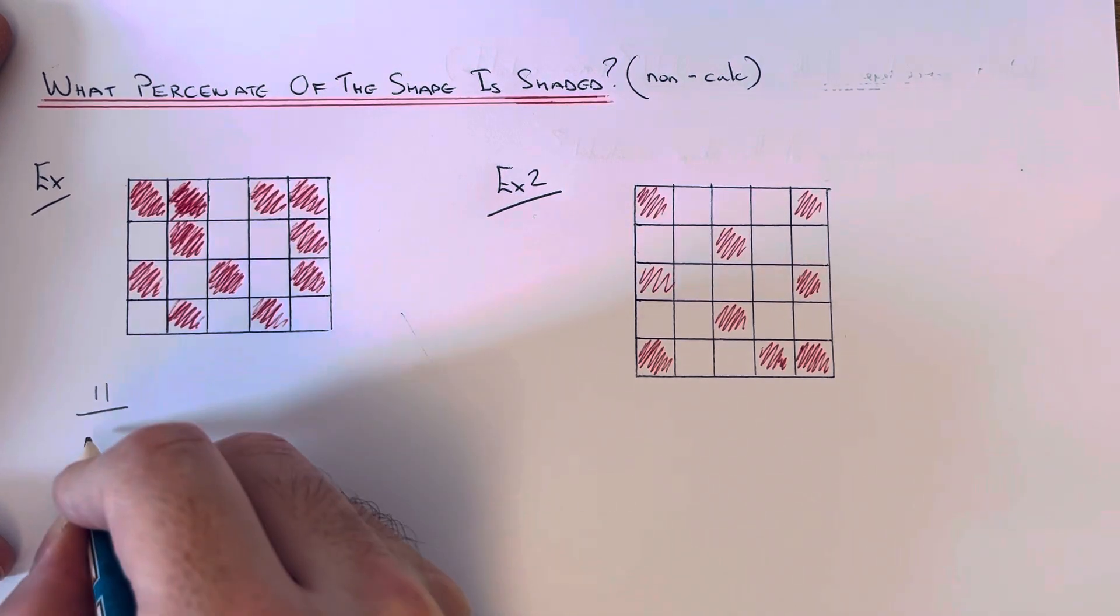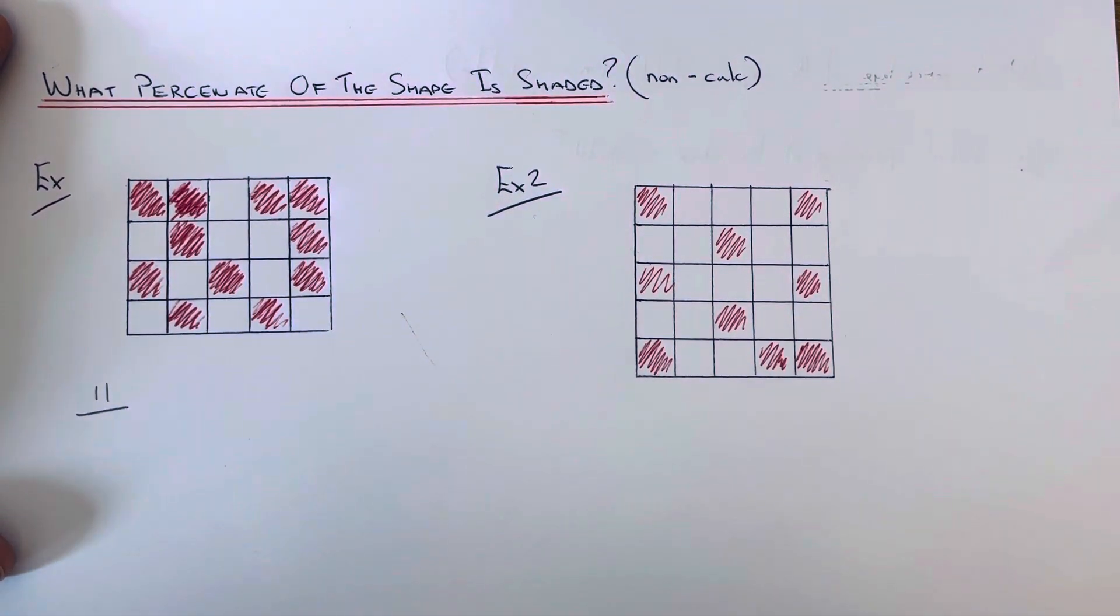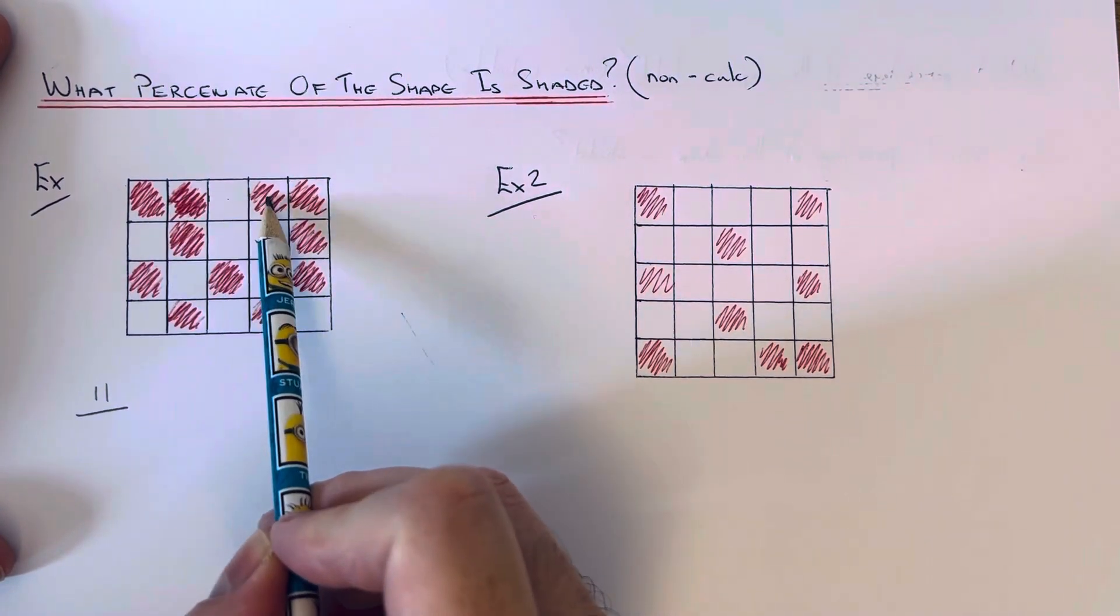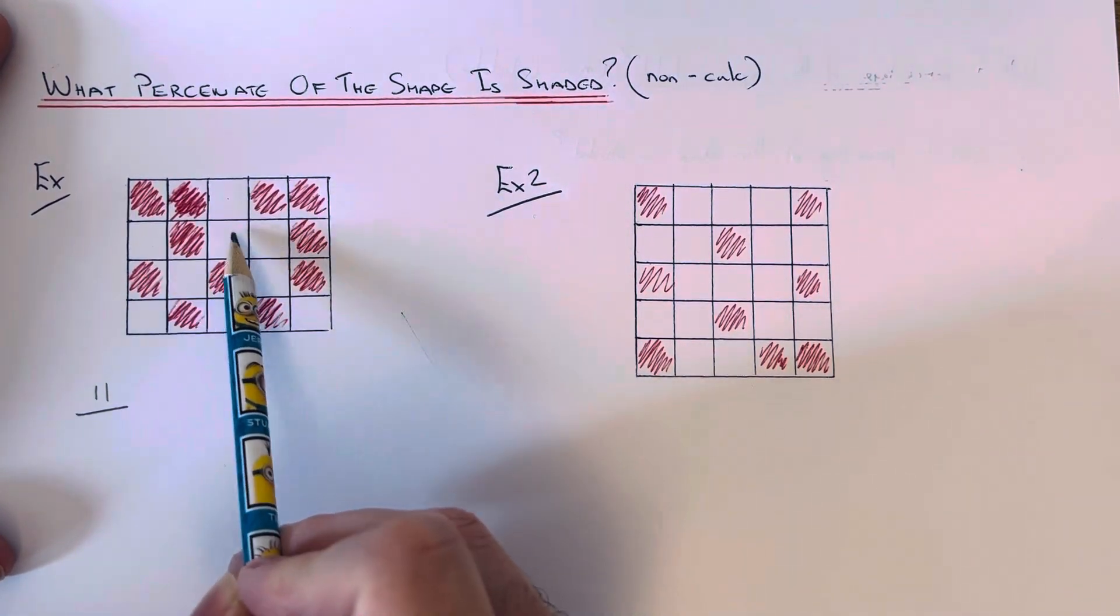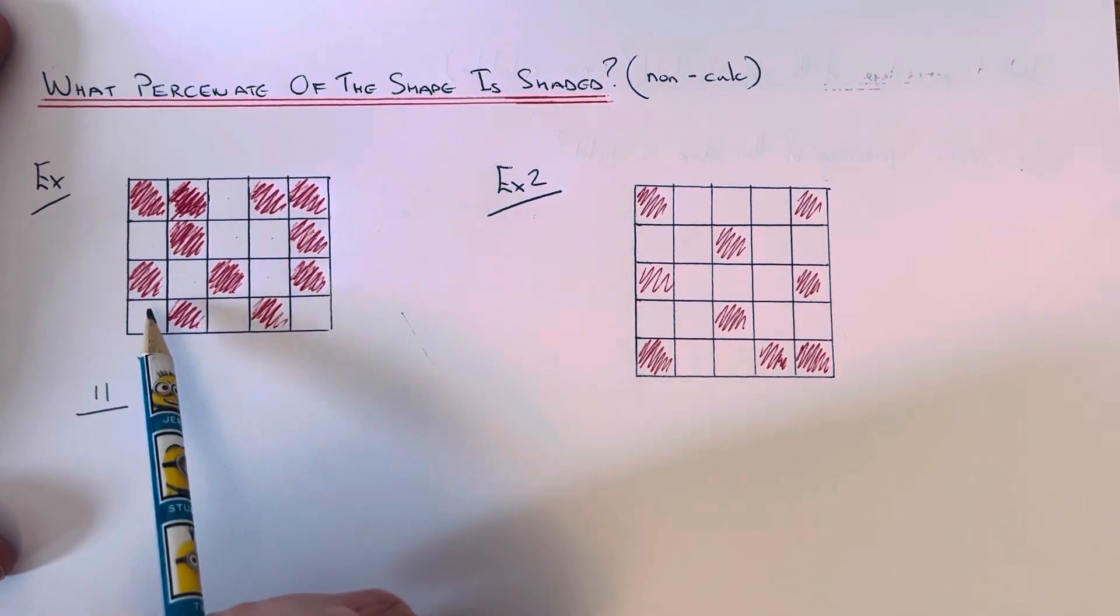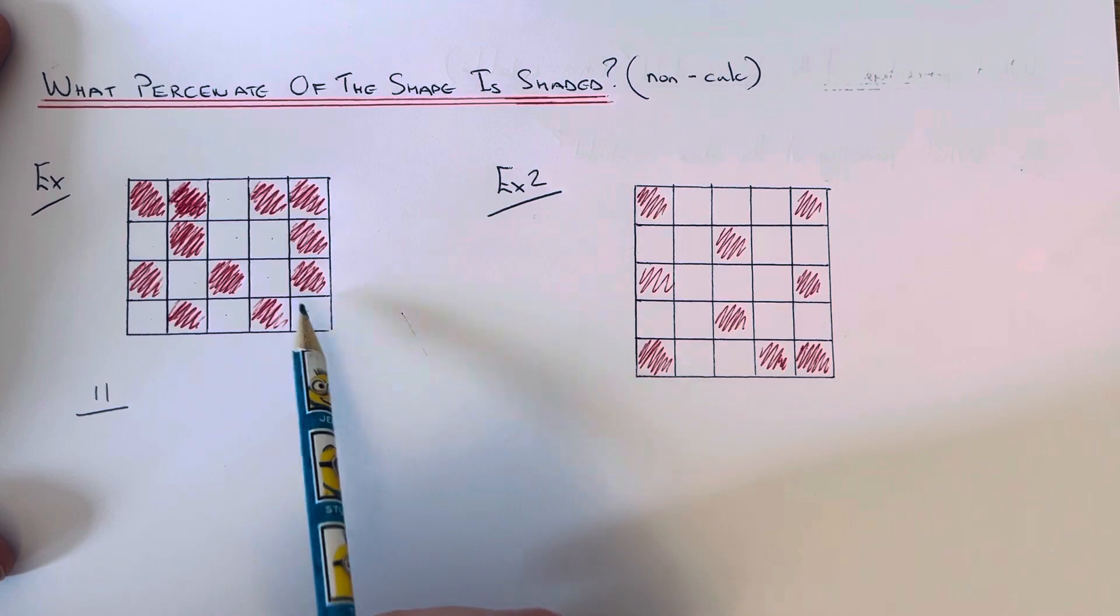And then on the bottom of the fraction, the denominator, I'm going to count how many squares I have altogether. So we've got 1, 2, 3, 4, 5, 6, 7, 8, 9, 10, 11, 12, 13, 14, 15, 16, 17, 18, 19, 20.